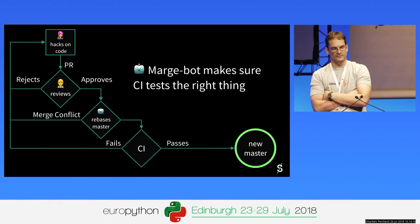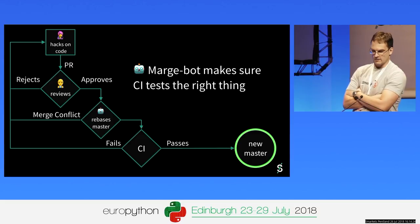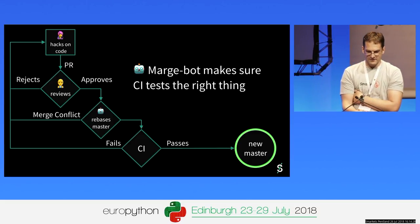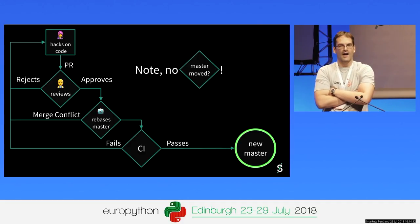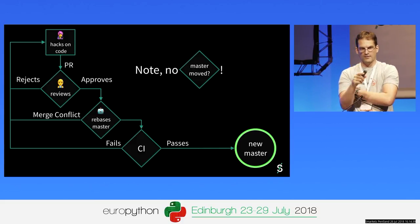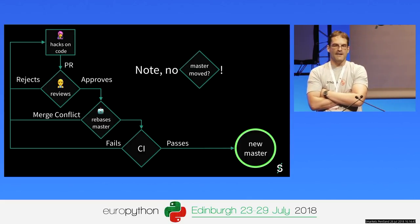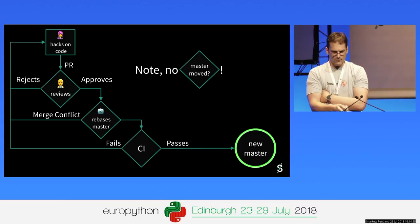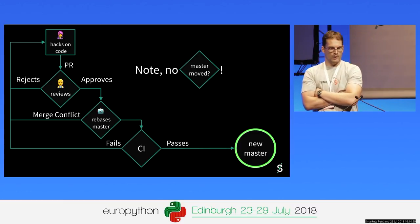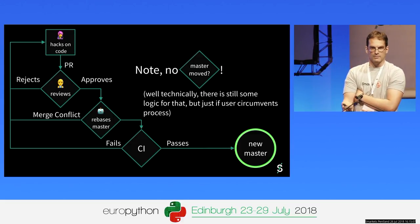What does this bot do? It does the rebasing of master into your branch for you, so what CI actually tests will be the new master branch as it will be, and therefore it will always be green. If all the bot did was press rebase repeatedly, it still would not scale at all, because you would have N branches — where N is the number of open pull requests — rebuilding all the time when something gets merged to master. So instead, Marchbot maintains a queue and merges things in one by one.